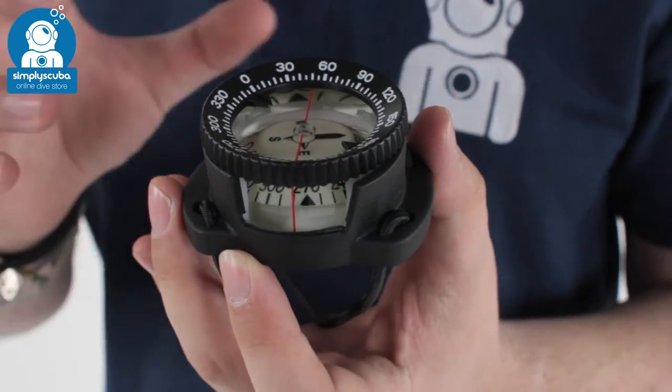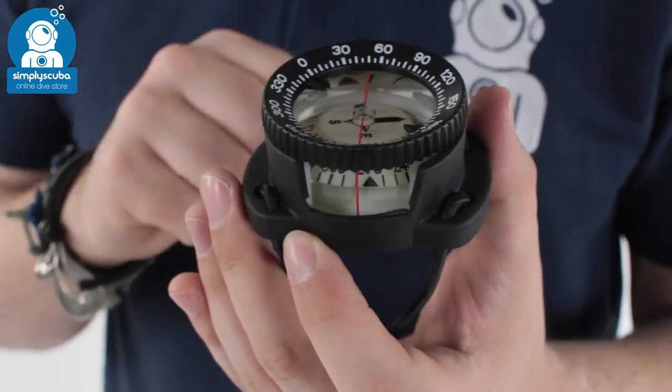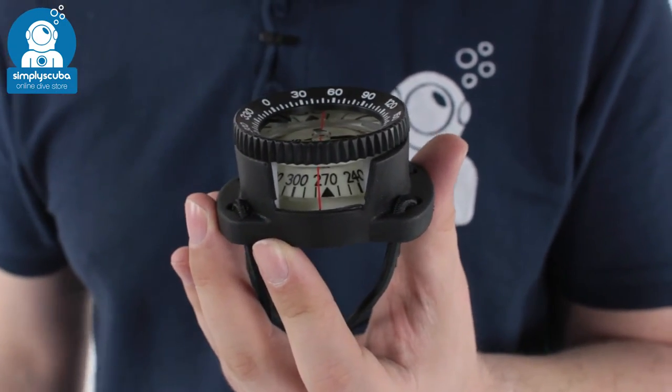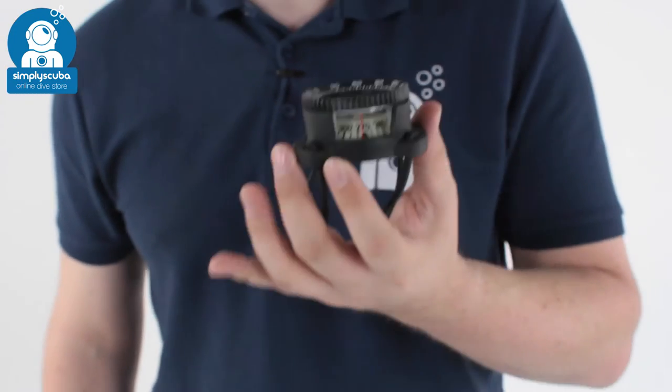So all in all, very handy compass that you can just mount on your wrist very quickly. Bungee mount means that it's going to adjust due to compression at depth. Very handy compass. That's the DIR Zone Tech 30 Compass.